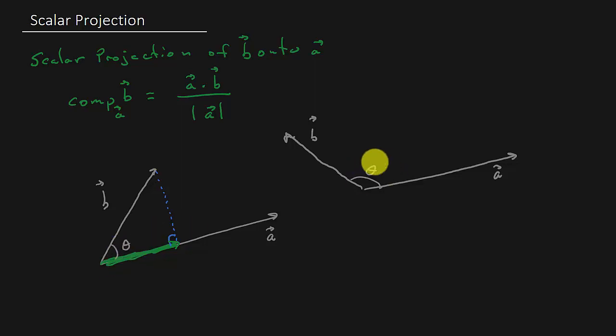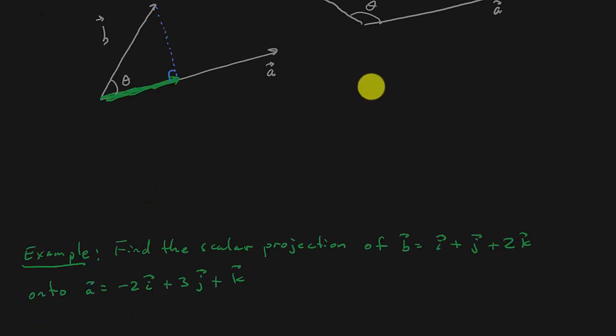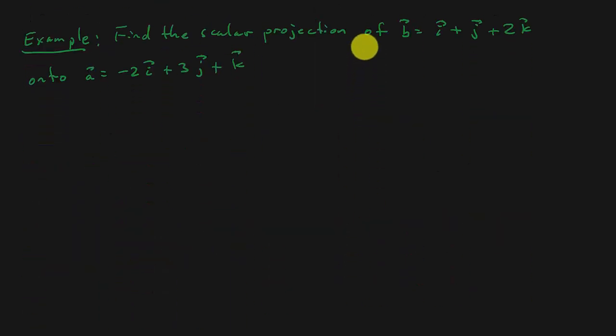So let's go ahead, work an example. Like I said, it's this formula right here. That's all it is. It's really simple. So it says find the scalar projection of B onto A.